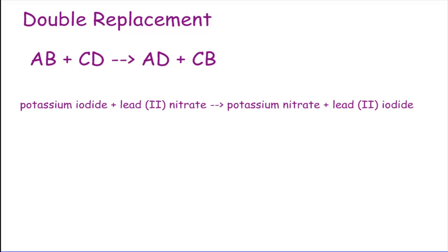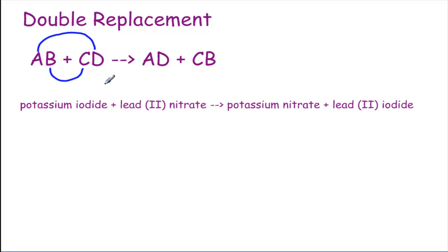Double replacement reactions are where you take two compounds and you switch partners. The positive ion here goes with the negative ion over here. Positive ion goes with the negative. This is like the OI part — outer, inner. So you get AD and CB.